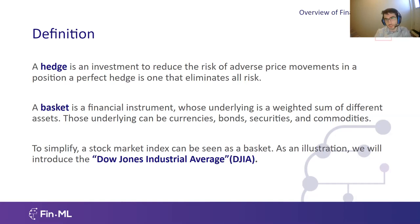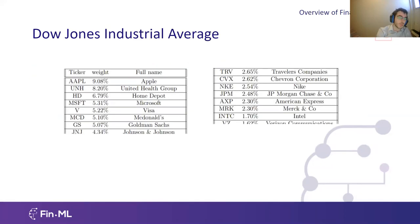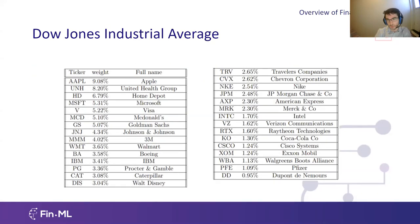To simplify what the basket is in this presentation, we'll talk about an index. An index can be seen as a basket because it is a weighted sum of stocks. In our presentation, we will use the Dow Jones Industrial Average as our basket. The Dow Jones is an equity index that tracks the performance of 30 large-cap companies of the US. The weight of each company is based on the proportion it represents in the economy.